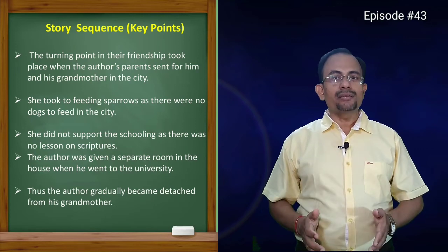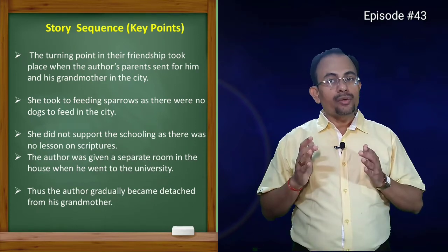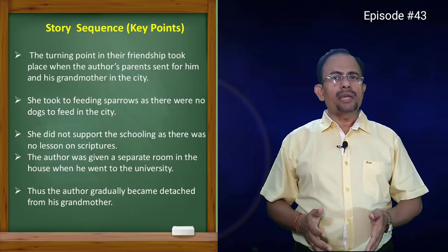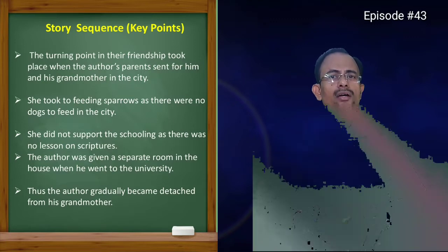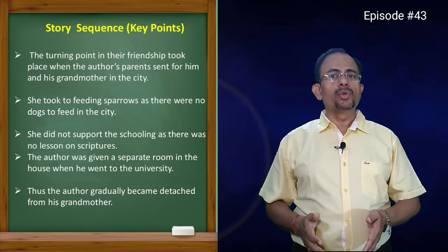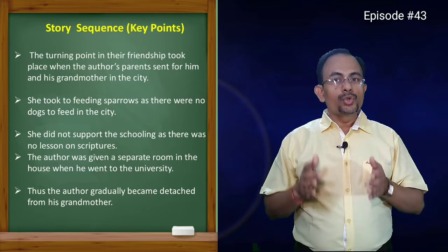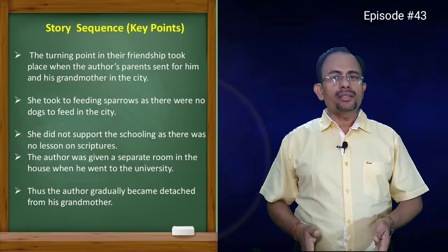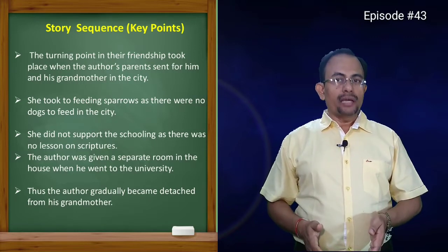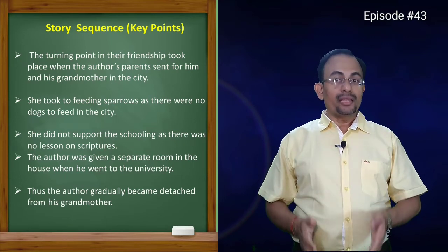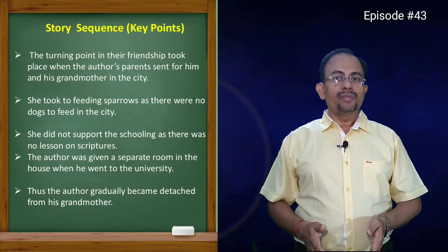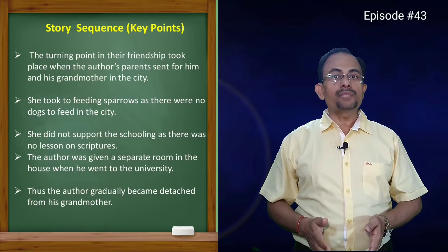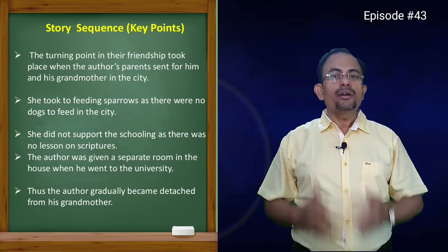The turning point in their relationship took place when the author's parents sent for him and his grandmother to come to the city. He gradually became distant from his grandmother, as she could neither accompany him to the city school nor help him with his studies. She took to feeding sparrows, as there were no dogs to feed in the city. She did not like many things that were taught to the author, and a prominent change became visible in their friendship. When the author went to university and was given a separate room, this separation brought about a marked distance — the last link of their friendship.